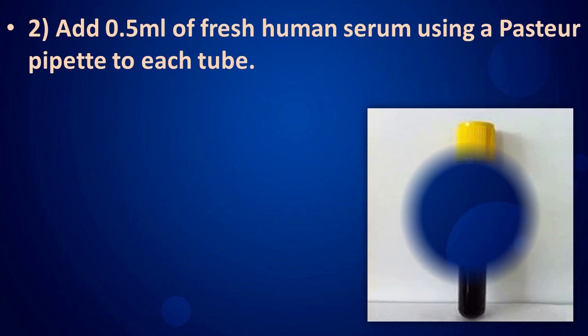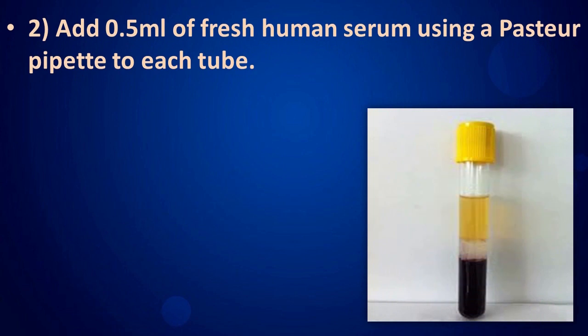Add 0.5 milliliters of fresh human serum using a Pasteur pipette to each tube.